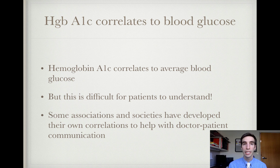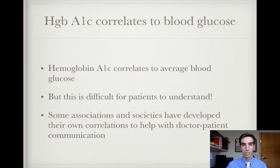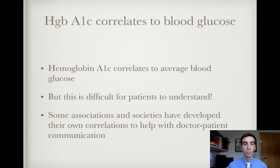Hemoglobin A1c correlates to an average blood glucose expressed in milligrams per deciliter. For example, a hemoglobin A1c of 6% correlates to an average blood glucose of 126. It's difficult for patients to understand this, and some associations and societies have developed their own models, formulas, and tables to help patients understand the conversion of hemoglobin A1c to average blood glucose.